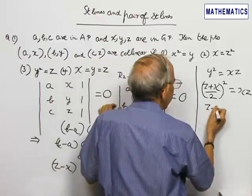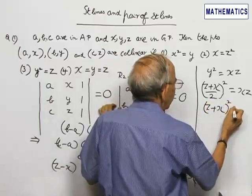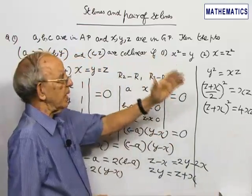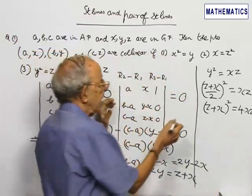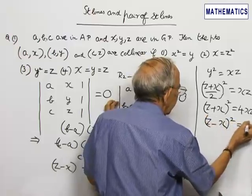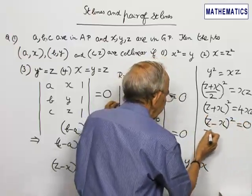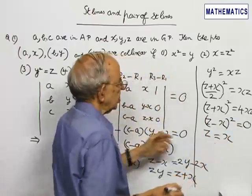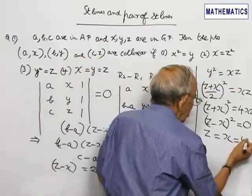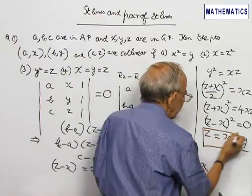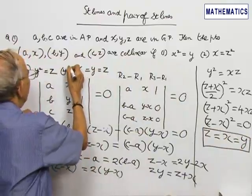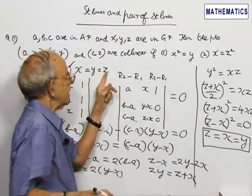Cross multiplying, (Z plus X) whole squared is equal to 4XZ. Expanding the left hand side and bringing 4XZ to the left hand side, this reduces to (Z minus X) whole square equal to 0, that means Z equal to X. On substituting in any one of the relations, we get this is also equal to Y. So X equal to Y equal to Z, that is choice number 4 is the correct answer.